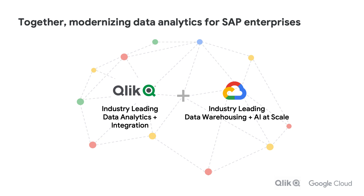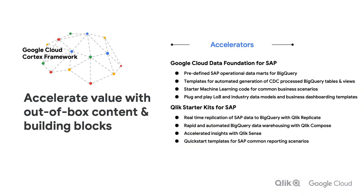Customers can easily integrate all of their core SAP data with additional enterprise data sets and use advanced analytic cloud services to enable powerful analytical and predictive outcomes. Customers can accelerate faster by leveraging the best of Google Cloud and Qlik solution accelerators for SAP. Combining these two powerful solutions together gives SAP customers a great head start on getting that business value extracted from that SAP content that they've had locked away for so long.